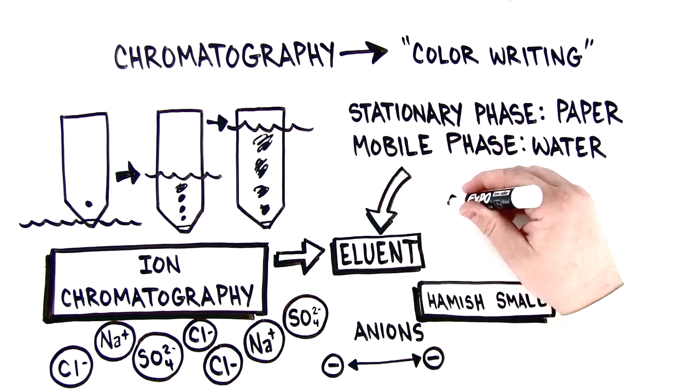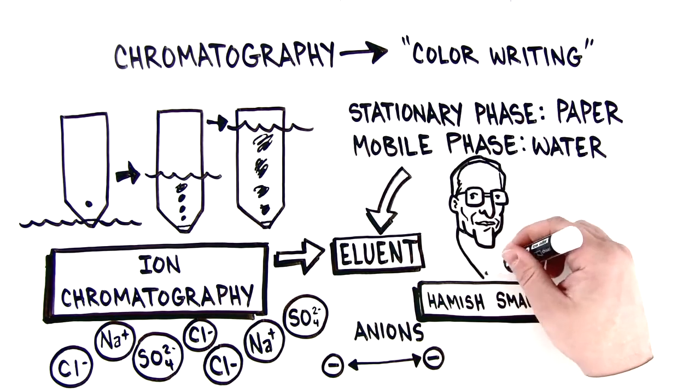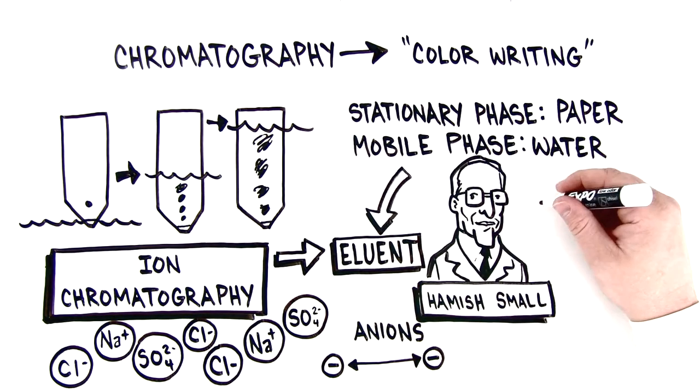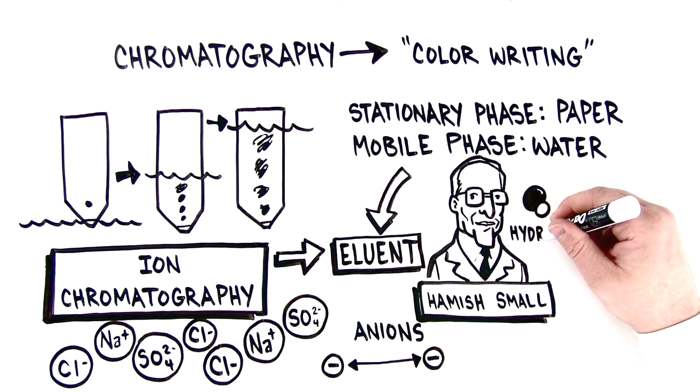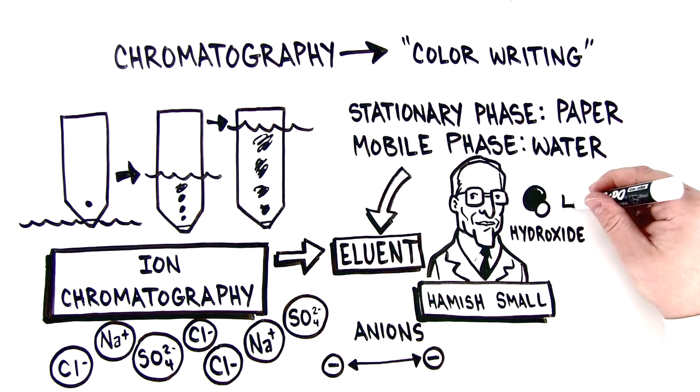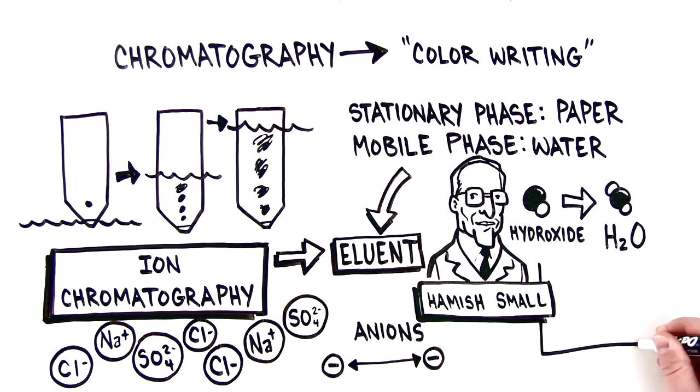In 1975 Hamish Small at the Dow Chemical Corporation introduced the world to his work on ion chromatography. The first eluent to be used for the separation of anions was sodium hydroxide. This eluent was ideal since after separation the hydroxide ions in the eluent could be converted to water by a suppressor allowing the signal from anions in the mixture to stand out.